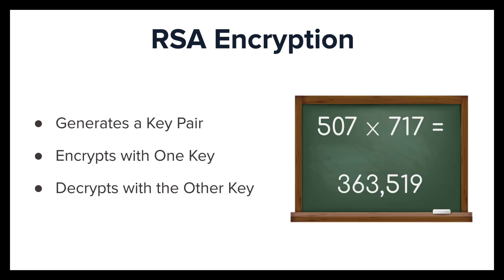The RSA algorithm uses a three-part process that includes the generation of a key pair, encryption using one of the keys in the key pair, and decryption using the other key in the key pair. Much like Diffie-Hellman, RSA relies on math that is easy to calculate in one direction but hard to reverse. It is based on the principle that it's easy to multiply large numbers but factoring large numbers is very difficult. For example, multiplying 507 times 717 is not a hard process, but trying to find the factors of 363,519 is very difficult.